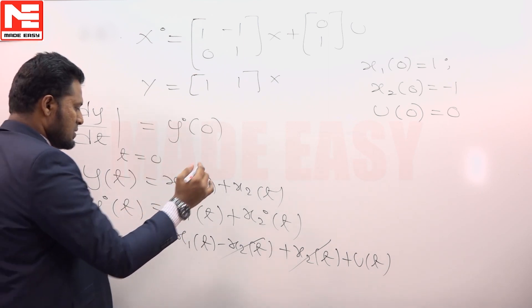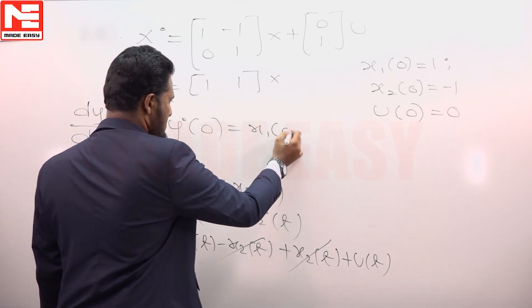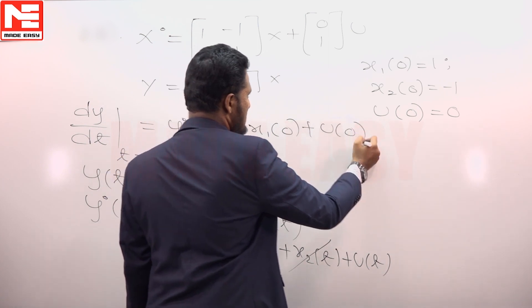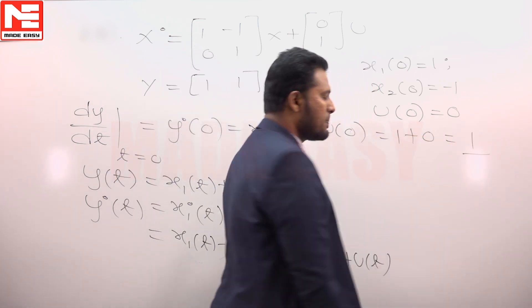So we can write y dot 0 as x1 of 0 plus u of 0, that means 1.